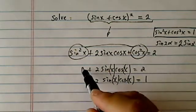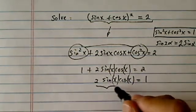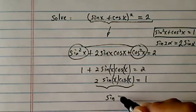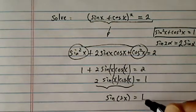Okay, so here I moved 1 over. Now, this is what I was saying earlier. Sine of 2x is equal to 1.